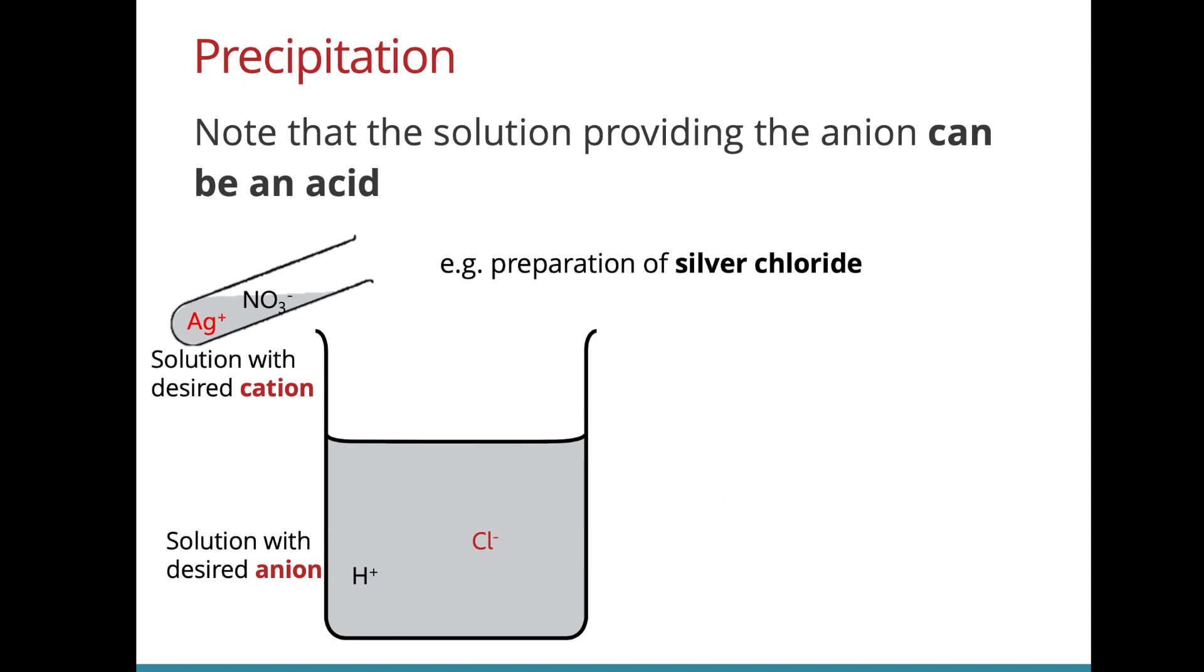If we want to prepare silver chloride, it doesn't matter what is the solution over here as long as it provides chloride ions and it is soluble. This means besides using sodium chloride, I can use potassium chloride, I can also use maybe even copper chloride, and I can also use acids, for example hydrochloric acid because all these solutions provide me with the chloride ions and when they meet with silver ions, they will join together to form the precipitate.